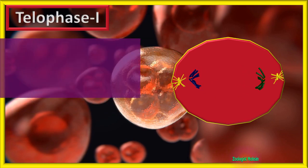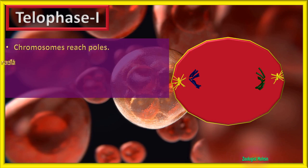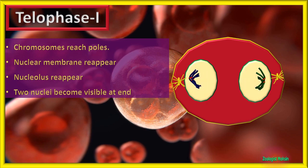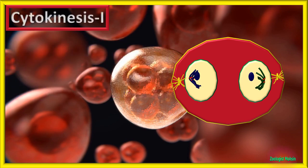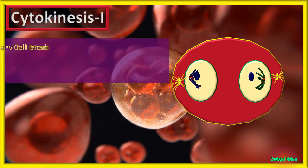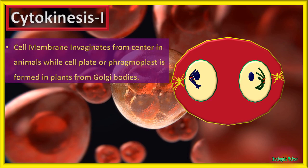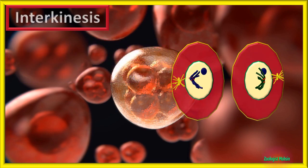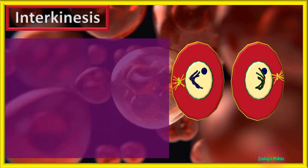Telophase 1: chromosomes reach the poles, nuclear membrane reappears, nucleolus reappears, and two nuclei become visible at the end of telophase 1. This is followed by cytokinesis 1 — the cell membrane invaginates from the center in animals, while a cell plate or phragmoplast is formed in plants from Golgi bodies. This invagination leads to two complete but smaller cells.